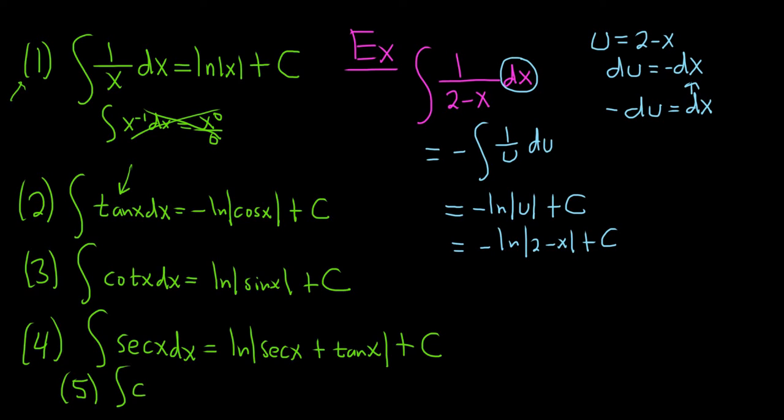And last but not least, the integral of cosecant x dx. This is negative ln absolute value, cosecant x plus cotangent x plus C. This one is very similar to secant. So if you watch the video on secant, in theory, you should be able to do this one.